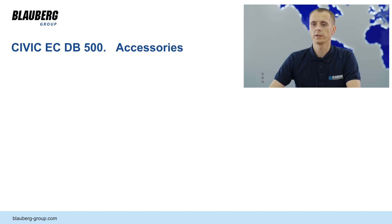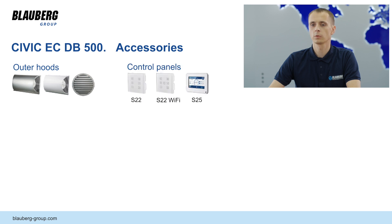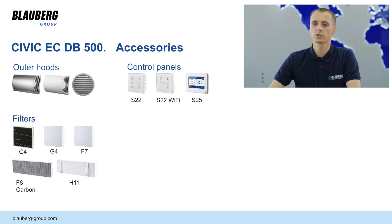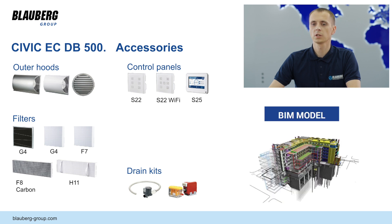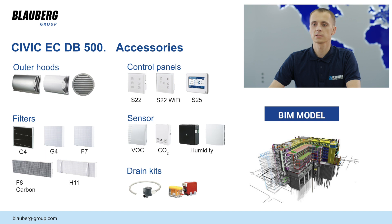The unit has a wide range of accessories: different outer hoods, three types of control panels, and air purification filters. To remove condensate, the unit can be equipped with a siphon or drain pump. BIM models of the units have been prepared to maintain a comfortable microclimate. A wide range of air quality sensors is available, including carbon dioxide sensors, VOC sensors, and humidity sensors.